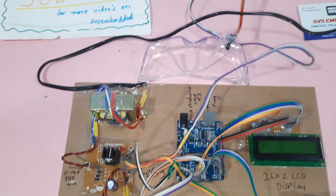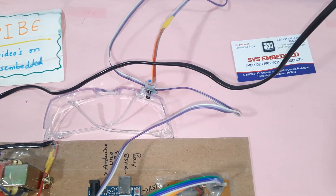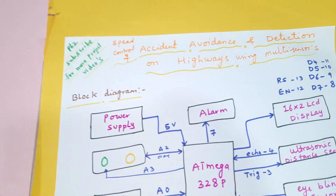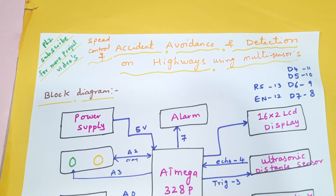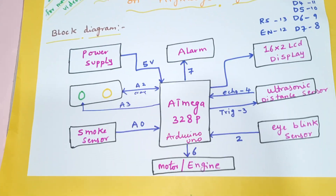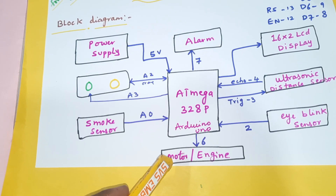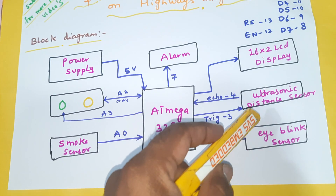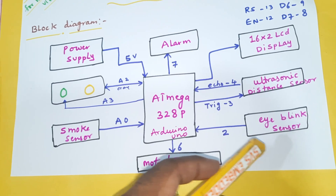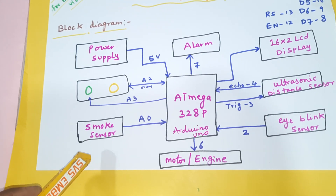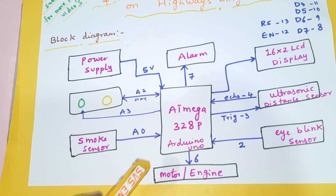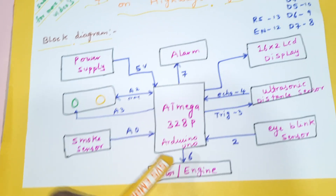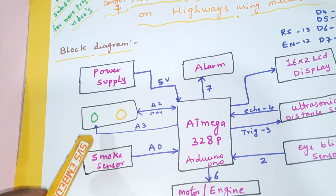Hi, we are from SBS Embedded. The project title is Speed Control and Accident Avoidance Using Multi Sensors. In this project we are using an ATmega328 microcontroller board, and we are using three sensors: ultrasonic distance measurement sensor, eye blink sensor, and smoke sensor, which can detect gases. We are also using one motor engine, one alarm, and LEDs.